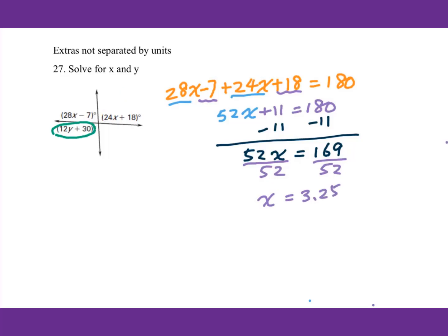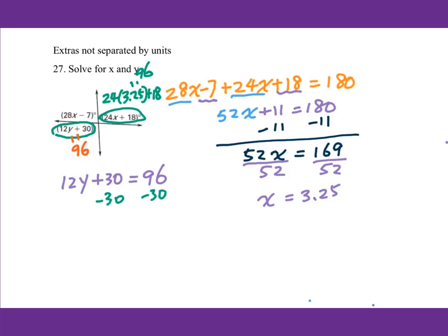Since this angle and this angle are vertical angles, they are equal to each other. So plug in X equals 3.25: 24 times 3.25 plus 18 equals 96 degrees. We set the other expression equal to 96: 12Y plus 30 equals 96. Subtract 30 from both sides: 12Y equals 66. Divide by 12: Y equals 5.5.